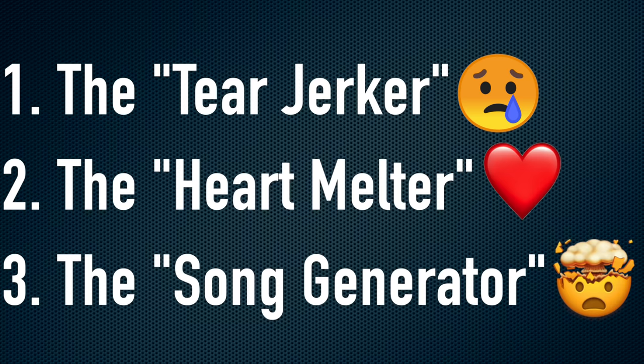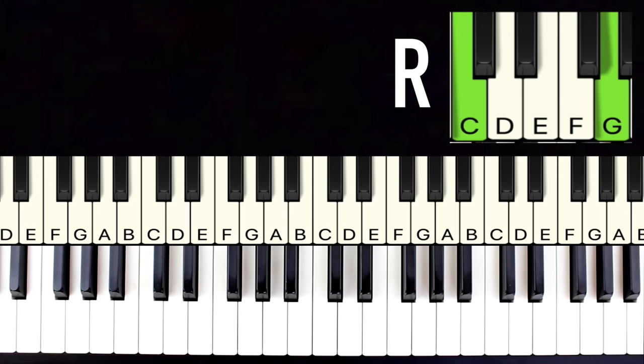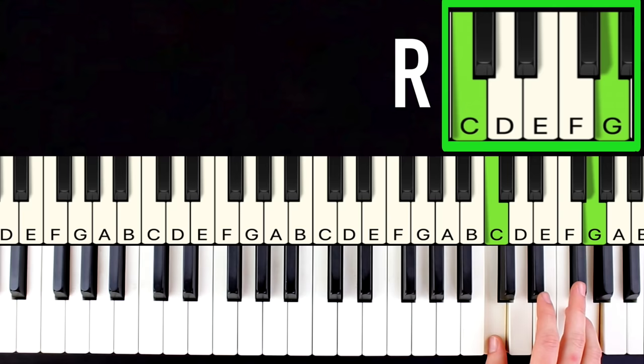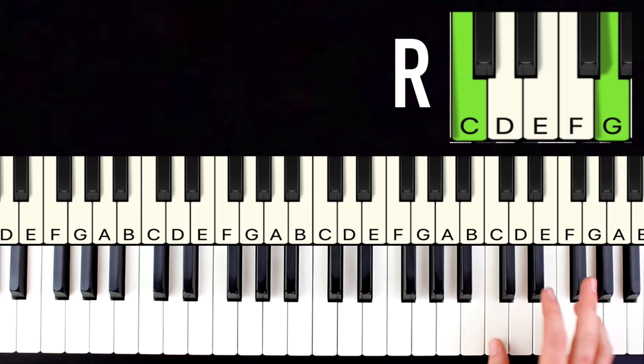Alright so skill number one is called the tearjerker. All you got to do is find two black notes and put your thumb to the note to the left of the two black notes and then count up one two three four five and put your pinky here. So now you have your thumb and your pinky and all you're going to do is play these two notes over and over and that's all you're going to do for your right hand the entire video.